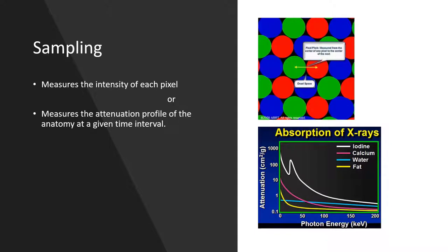To accomplish this, we measure the attenuation profile of the anatomy at a given time and a given place. These intensities are then matched with a lookup table to produce a specific image.